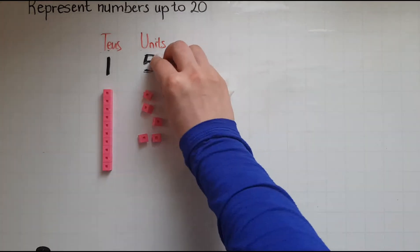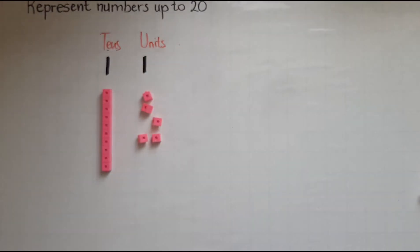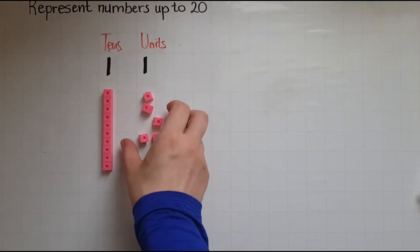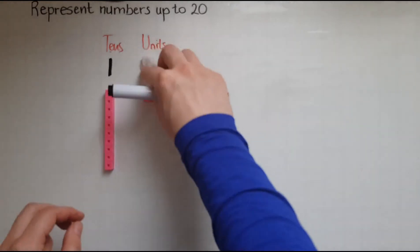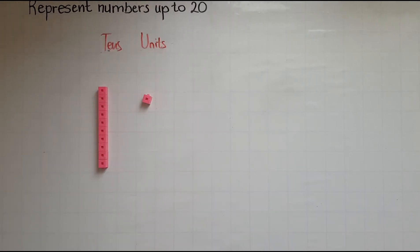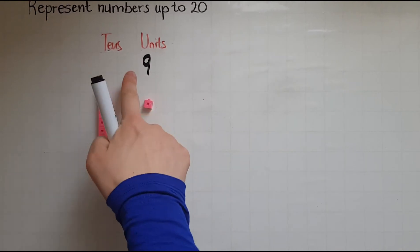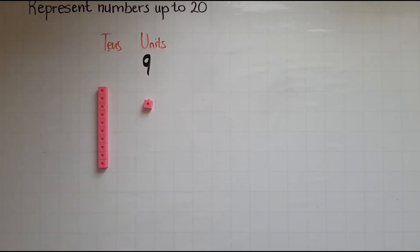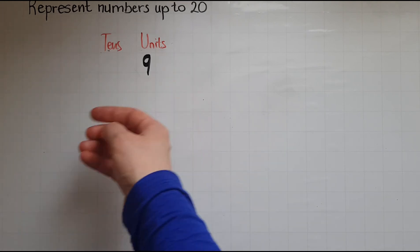If I have eleven, that means a ten and just one unit. What would happen if I had just nine? Nine. So nine cubes. Where would I put the nine? Under the tens or the units? It goes under the units because I haven't got ten yet. So nine is smaller than ten. So do I need to keep this here? No.